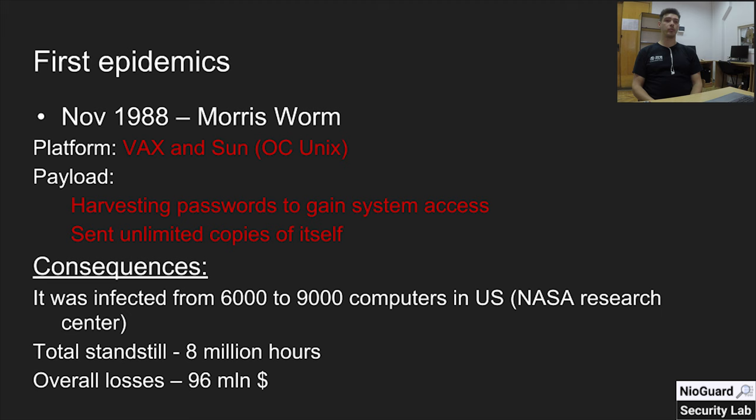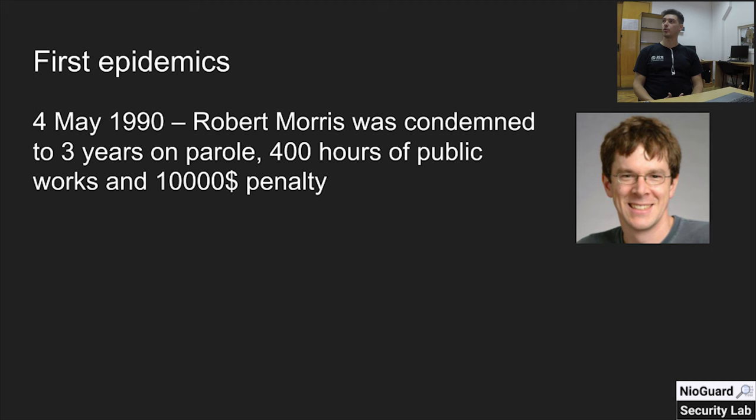Because there was no control over the number of copies running on infected computers, the worm managed to knock out 6,000 to 9,000 computers in the United States, particularly at NASA Research Center. The total standstill amounted to 8 million hours, and overall losses were calculated at $96 million. On May 4, 1990, Robert Morris was sentenced to three years of parole, 400 hours of community service, and a $10,000 penalty.